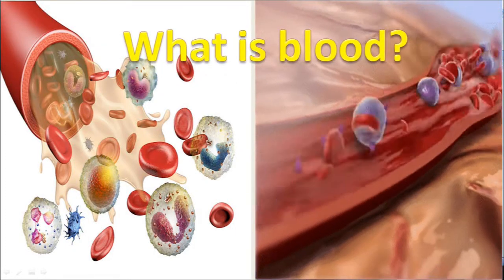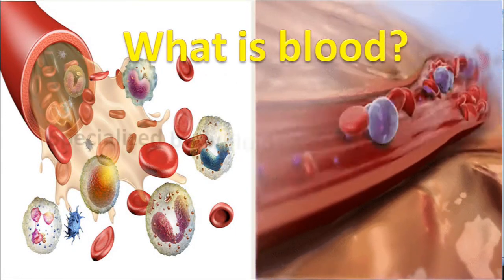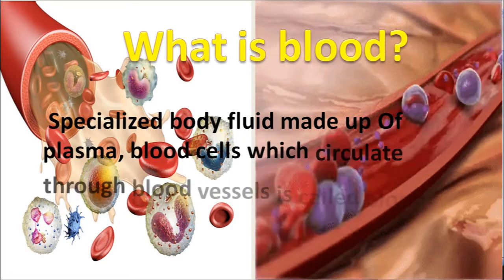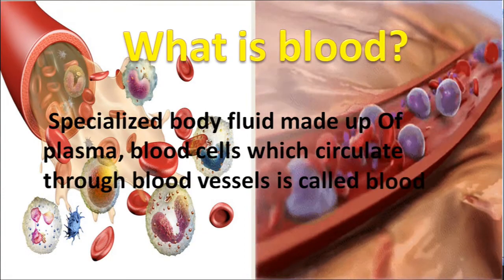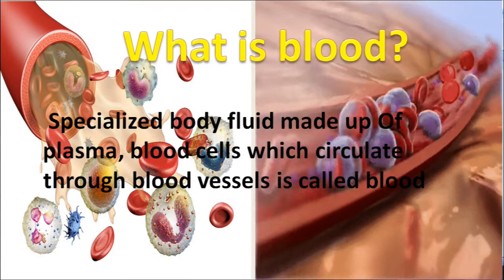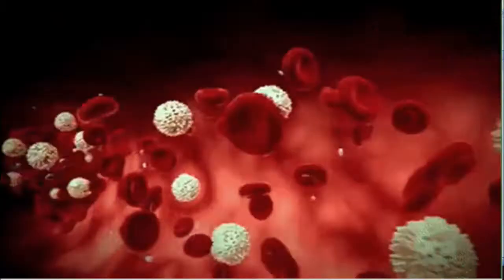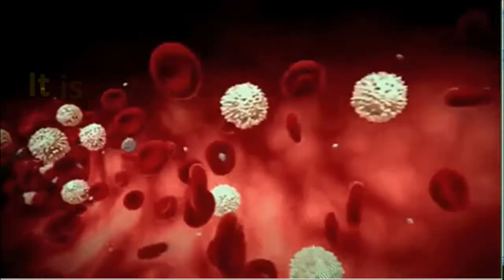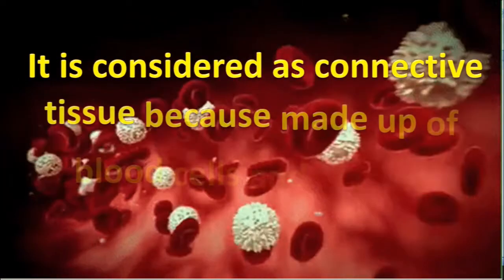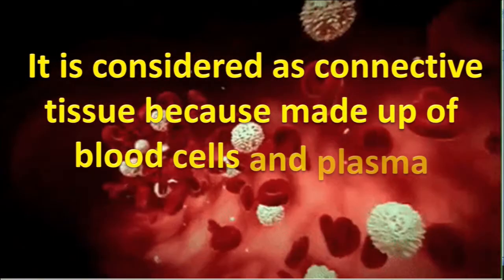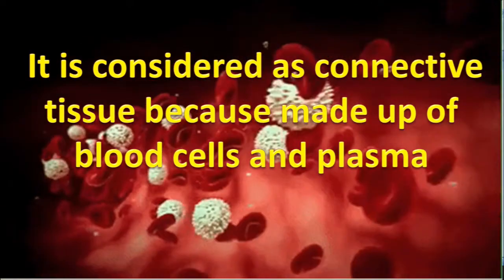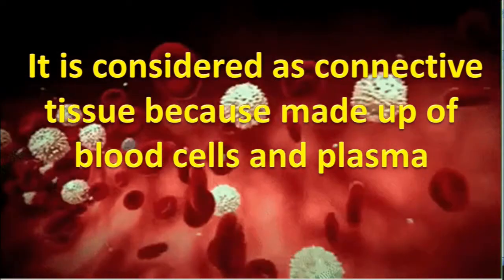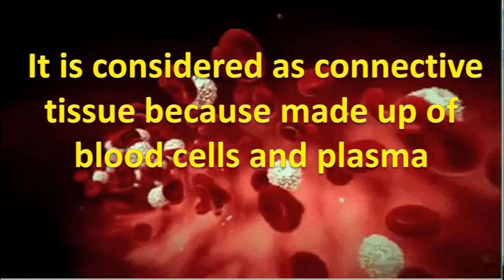What is blood? A specialized body fluid made up of plasma and blood cells, which circulate through blood vessels, is called blood. It is considered as connective tissue because it is made up of blood cells and plasma. It contains various matrix of blood cells, hence known as connective tissue.